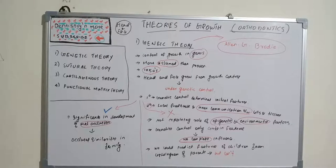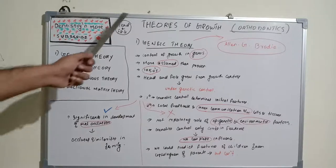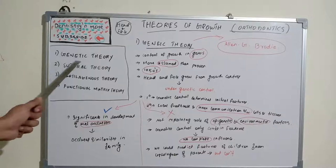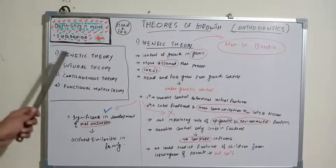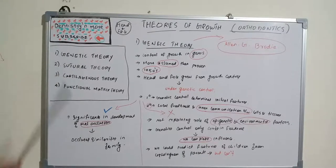Hello everyone, welcome back to a new video on dentistry and more. Today's topic is about theories of growth. There are various theories of growth of head and face region in orthodontics: genetic theory, sutural theory, cartilaginous theory, and functional matrix theory.